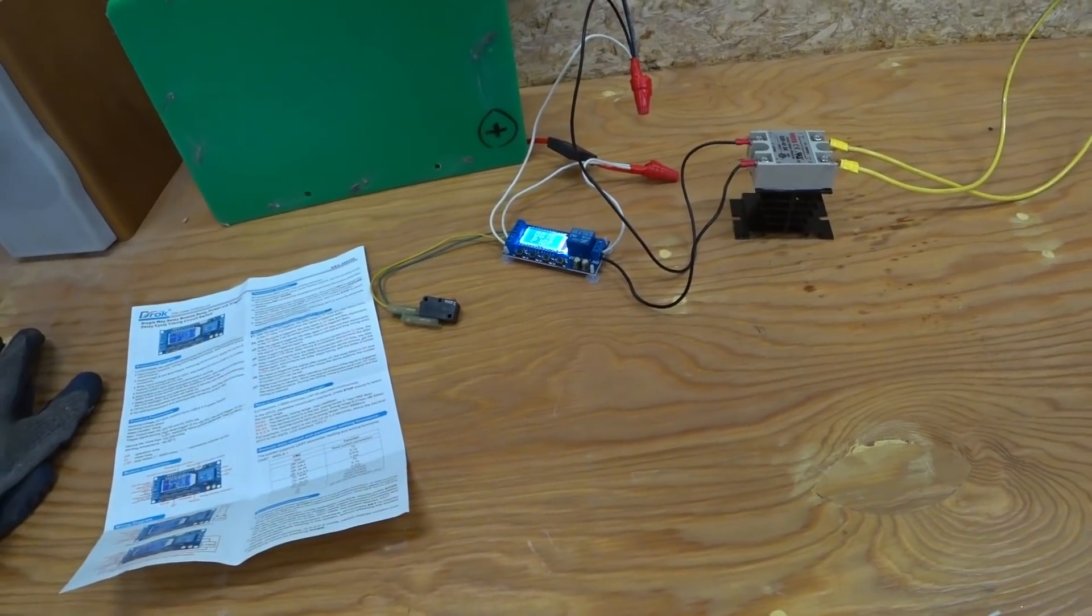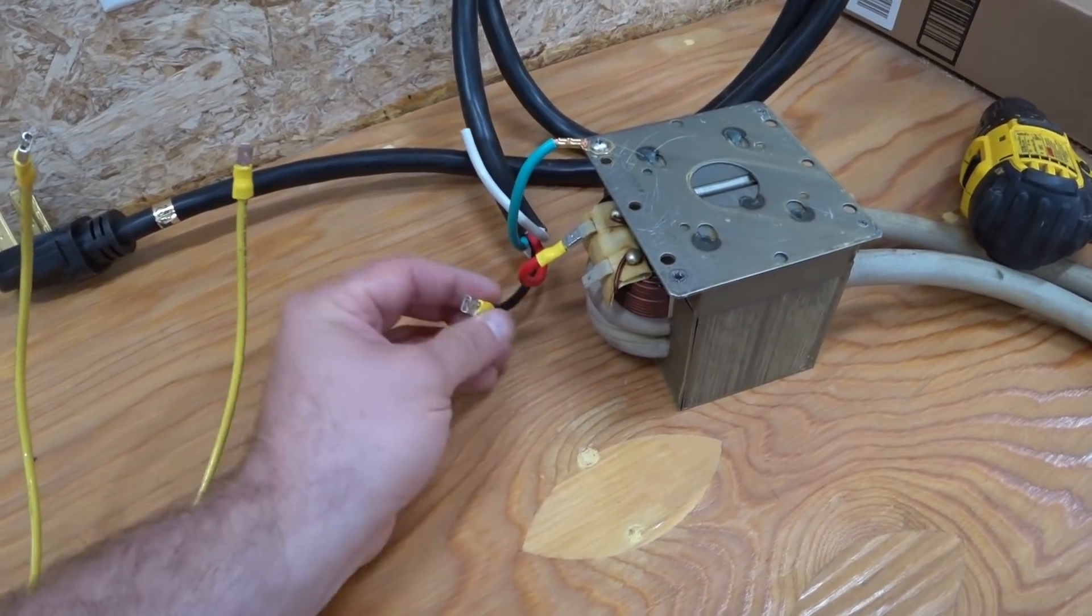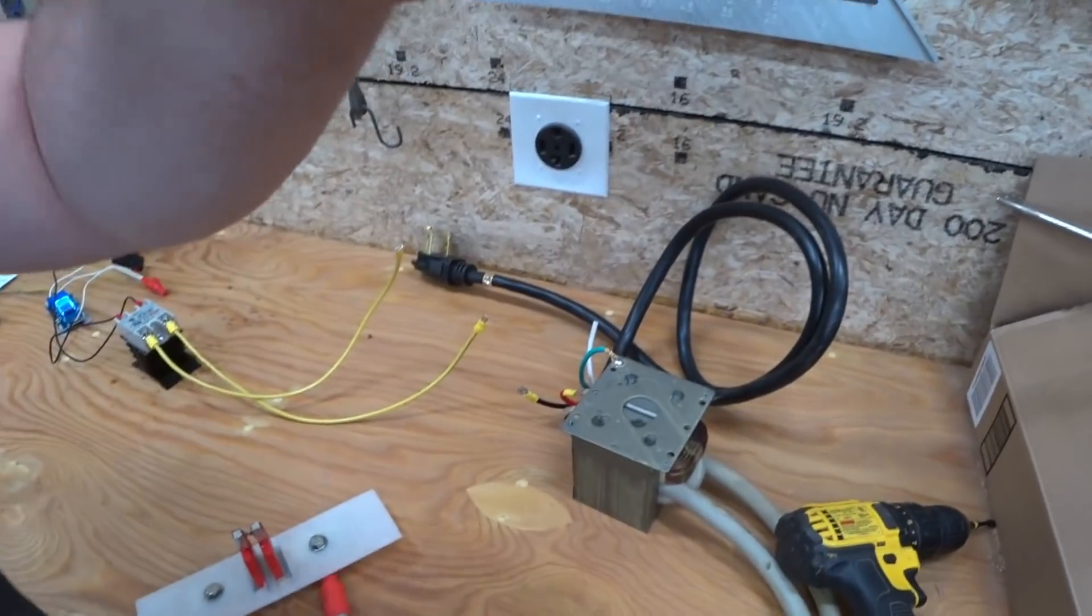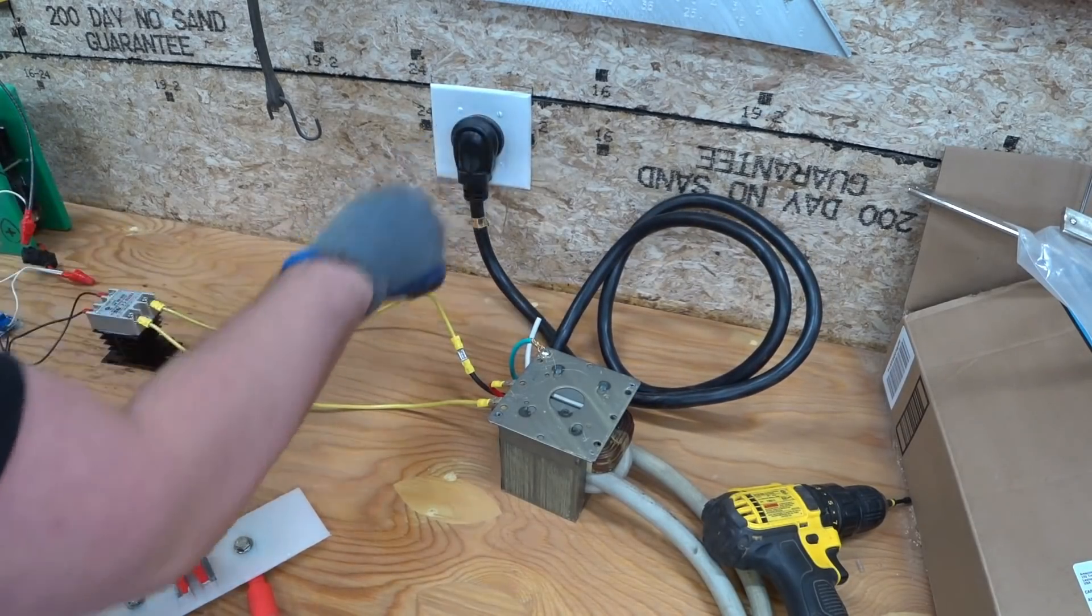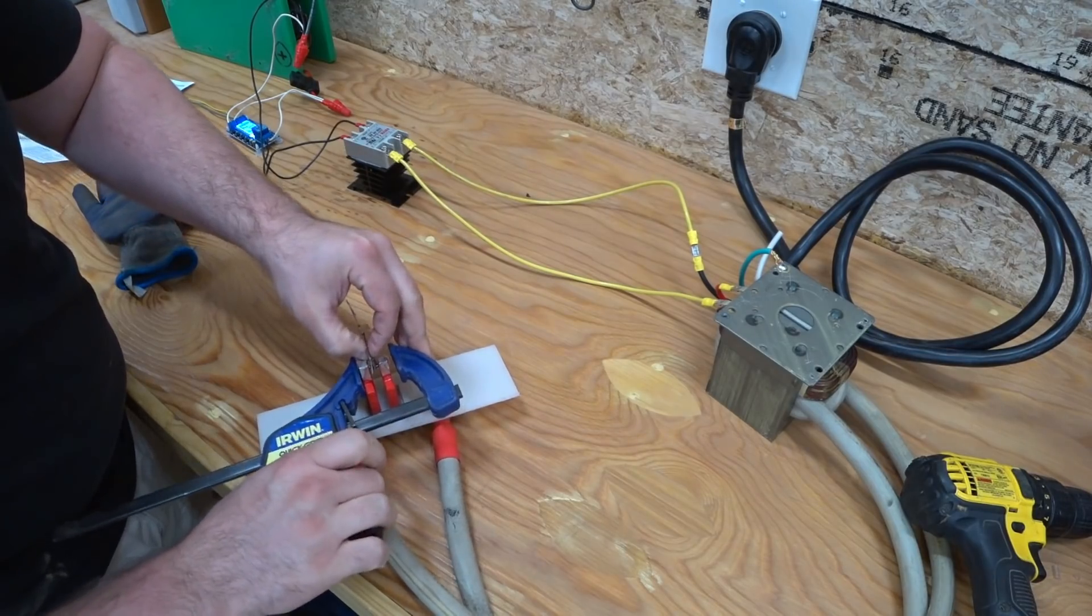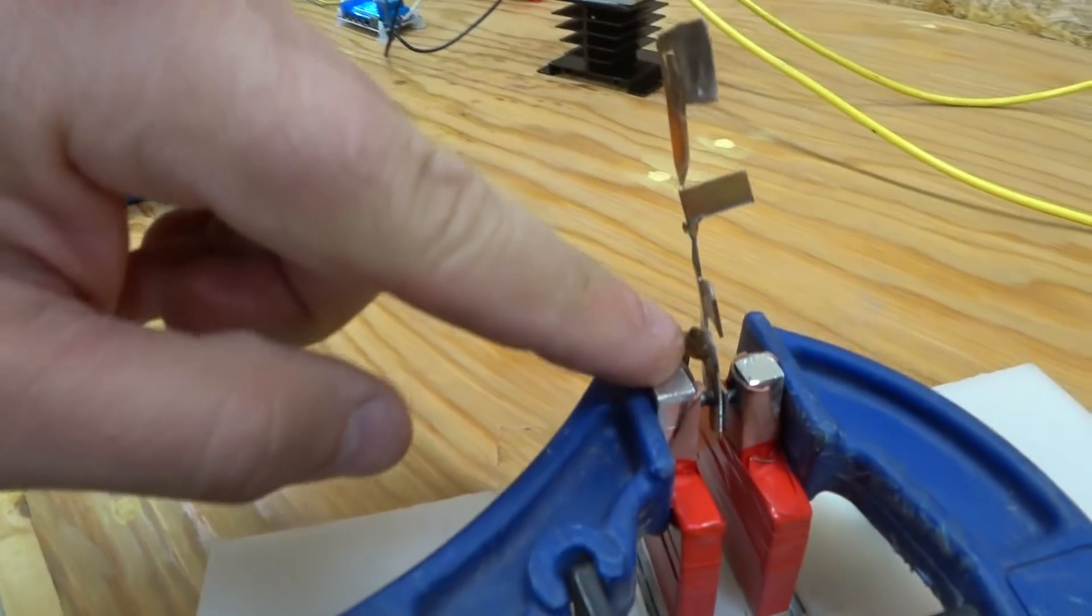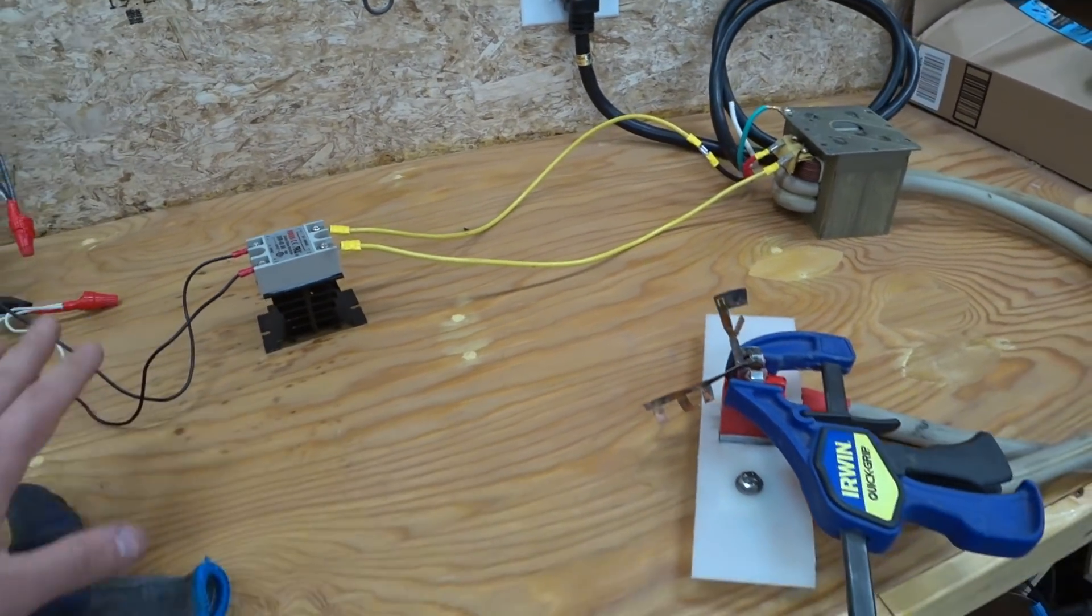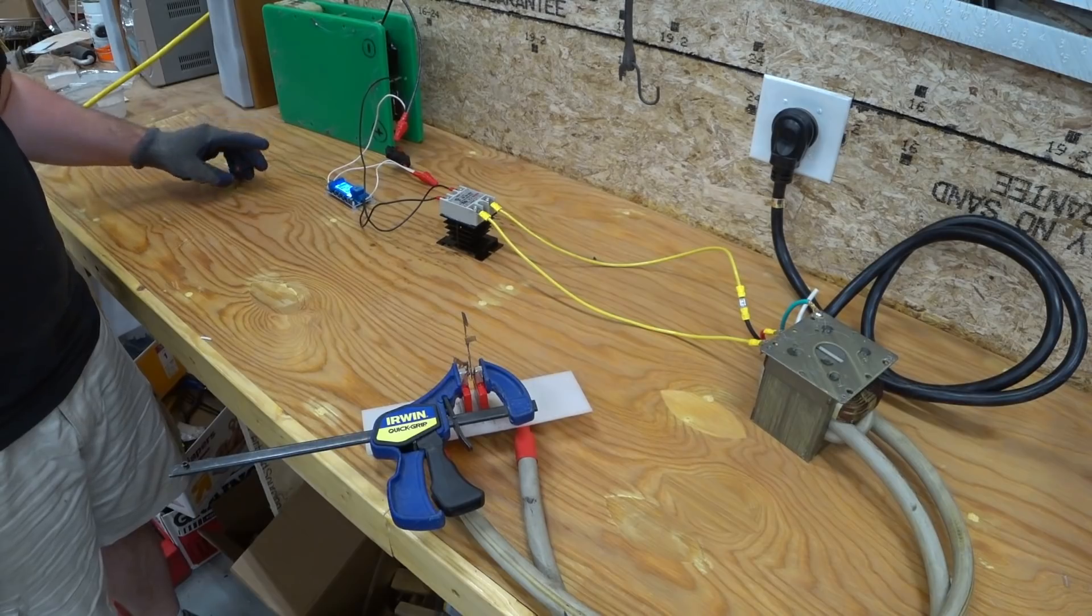So let's go ahead and hook the transformer up. And see if a tenth of a second is the length of time that we need. The ground is connected. Negative doesn't get connected. One of the hot 120 volt legs gets connected there. And then it doesn't matter which one. But one of these is going to come over to the solid state relay. So let's go ahead and connect this up. All right. So we've got our tungsten leads in there. On the copper pressed tightly together. And everything looks good. I'm going to go turn the circuit breaker on. And hopefully when I turn the circuit breaker on. Nothing happens. Well I think we're good to go to try this.